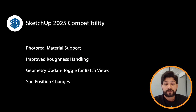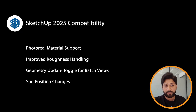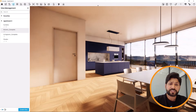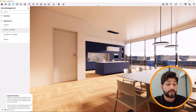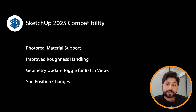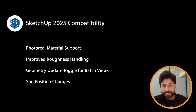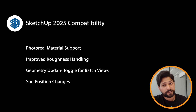The geometry update toggle for batch views lets you speed up view switching and batch rendering by preventing unnecessary geometry reloads — controlled right in the view management panel. Additionally, sun position changes made in SketchUp 2025 under the Environments tab are accurately reflected in Enscape, ensuring consistent lighting between the modeling environment and final renders.